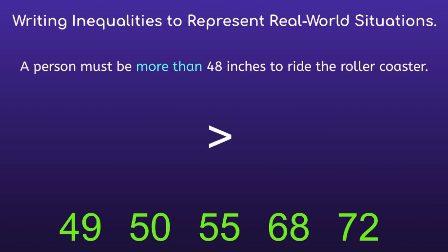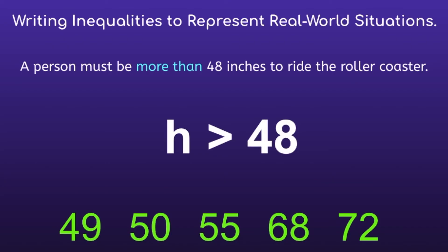We know that the person must be more than 48 inches, so I can add the 48 to the right of the inequality symbol. The last thing we need is a variable. Since we're talking about someone's height, we can use the variable h. The final inequality will be h is greater than 48.